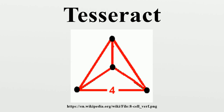There are four cubes, six squares, and four edges meeting at every vertex. All in all, it consists of eight cubes, 24 squares, 32 edges, and 16 vertices.